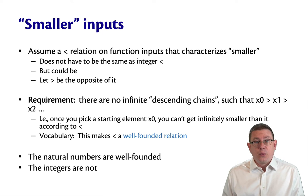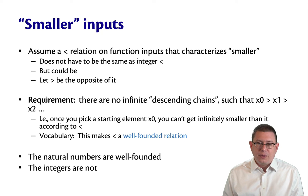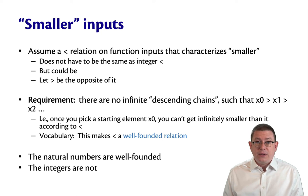So the natural numbers are well-founded. You start at any natural number you want. Eventually, by getting smaller and smaller, by going down by one at each step, you get down to zero. The mathematical integers, though, are not well-founded, because you can keep going infinitely low.